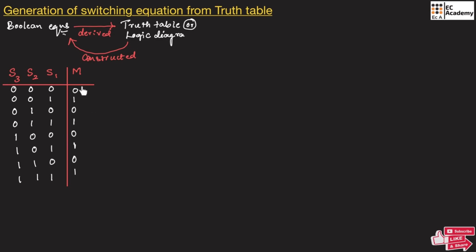From this truth table, let us generate a switching equation. To generate the switching equation, we first need to observe the input variables that are producing the output as 1. A logic 1 in the truth table output column can form a term in Boolean switching equations. Here, S3, S2, and S1 are the input variables and M is the output.